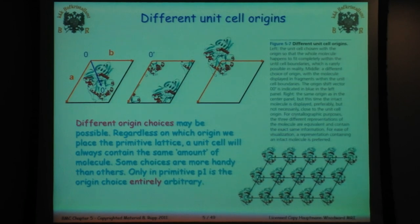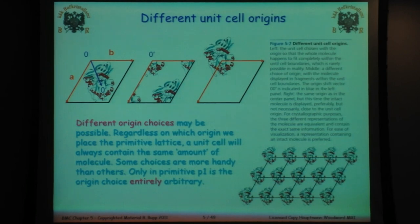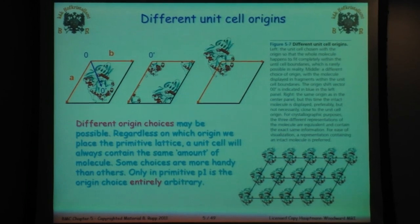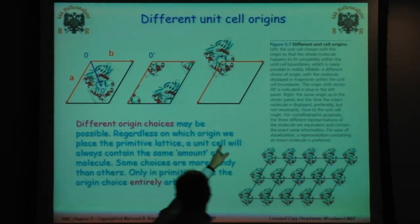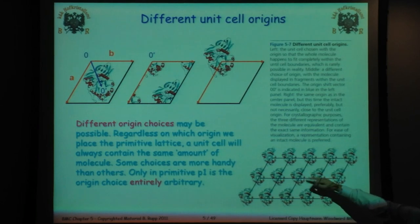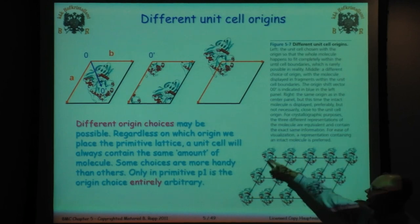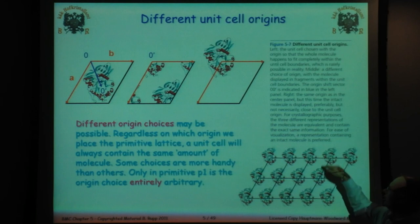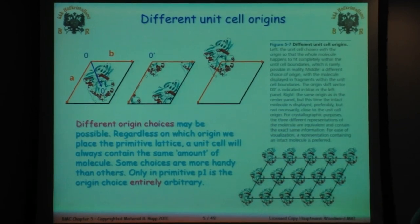It's very easy to move the origin to something else. Regardless of which origin the primitive lattice is placed on, the unit cell always contains the same amount of the molecule. If I have this lattice with four parts of a molecule, I can move that lattice in that orientation so the whole molecule is in one lattice. There are reasons why you might want to shift the origin — it usually comes in when you have a really important molecule and you're trying to solve it and getting problems in the data.